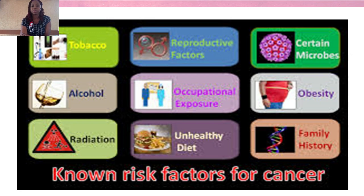All cancers have risk factors, which are as follows: radiation exposure, being exposed to certain viruses, and having a strong family history for the cancer. It's interesting to note that some risk factors — such as smoking, alcohol intake, eating unhealthy foods, and being obese — can be modified. We call these modifiable risk factors, meaning we can prevent them. Also occupational exposure, because some cancers are more common in persons of a particular occupation.